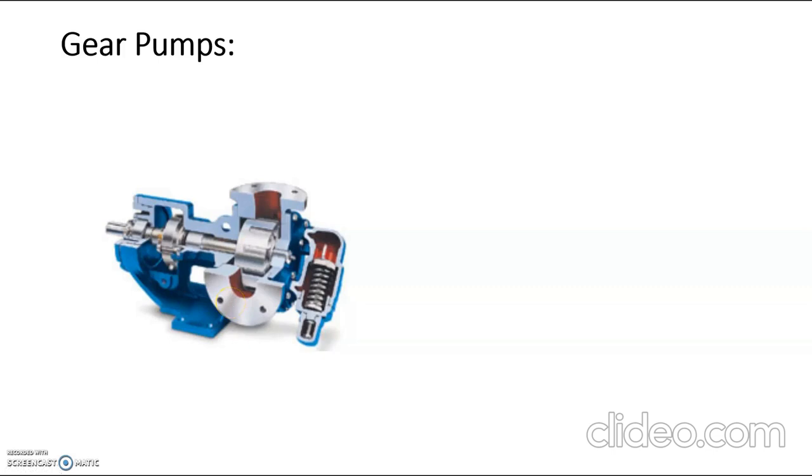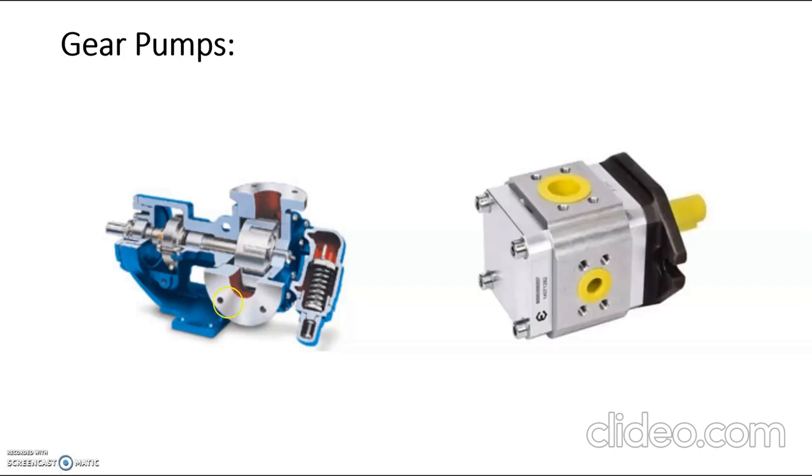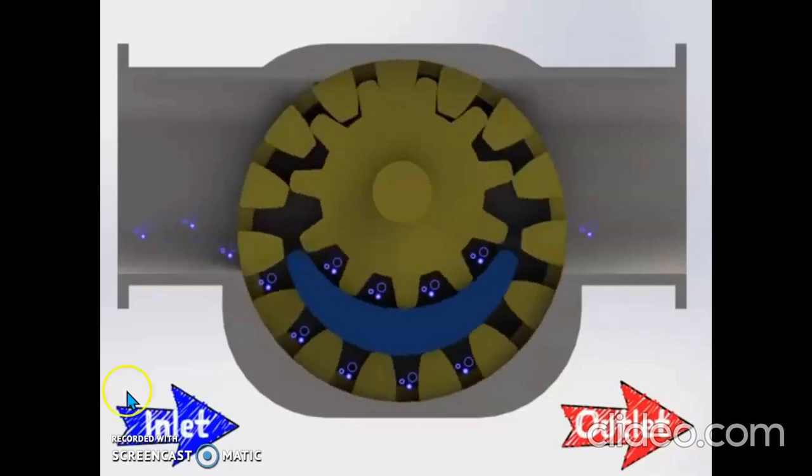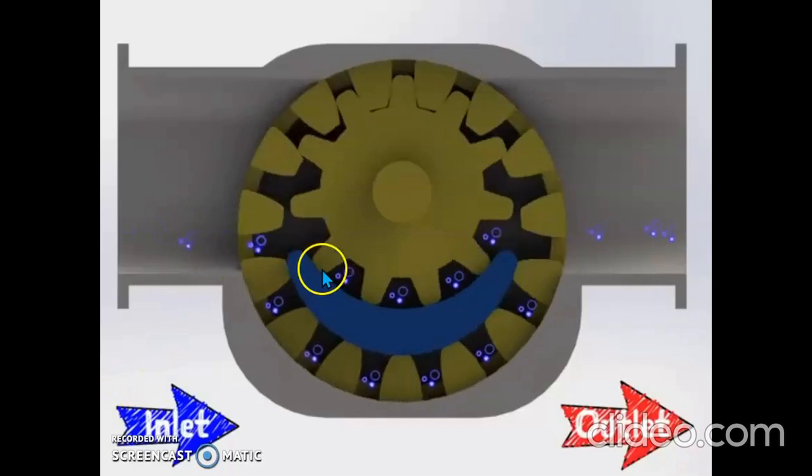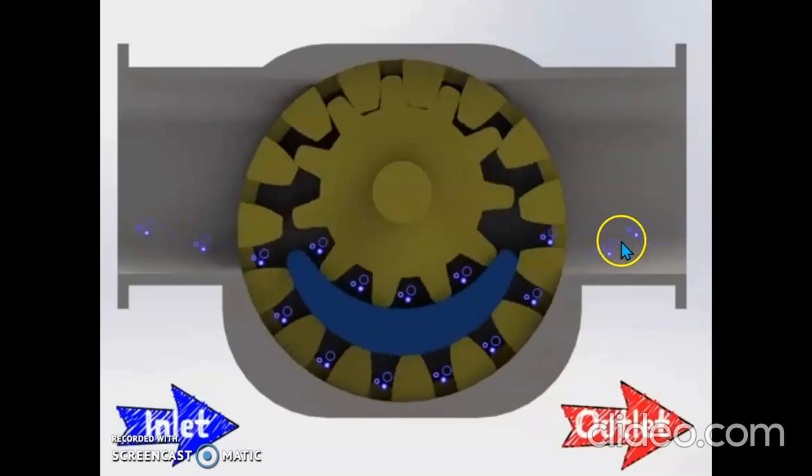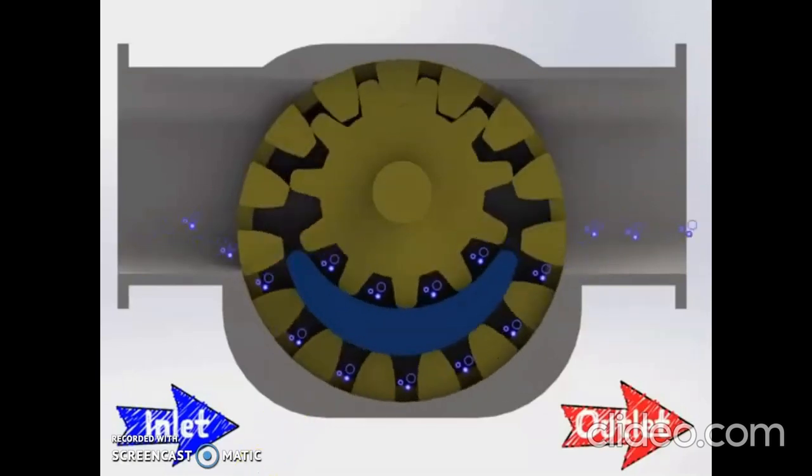This is the diagram and photographs of the internal gears. Now let's see the working of internal gear pump. It gets into the teeth and it will get pressurized when it reaches the outlet port.